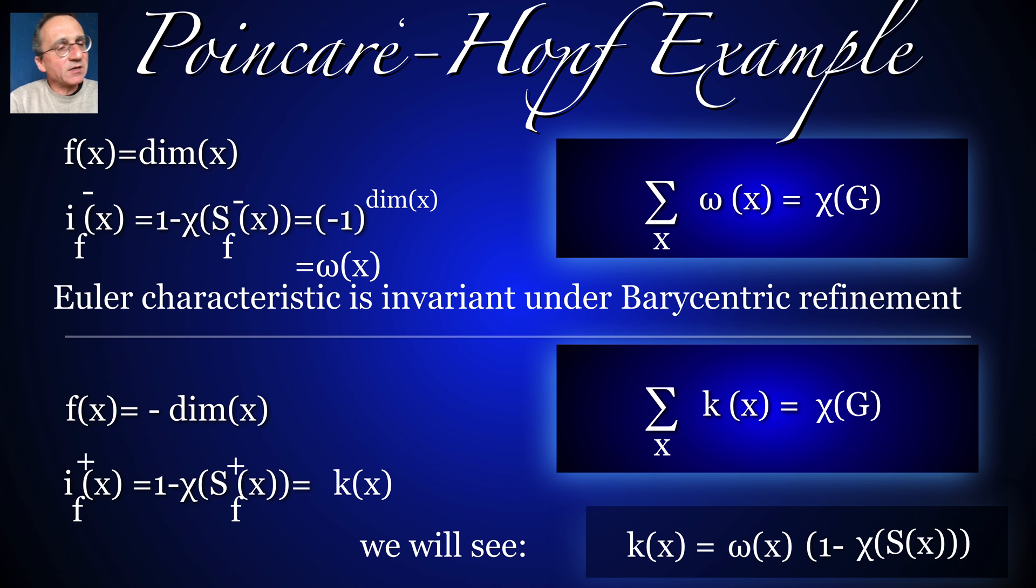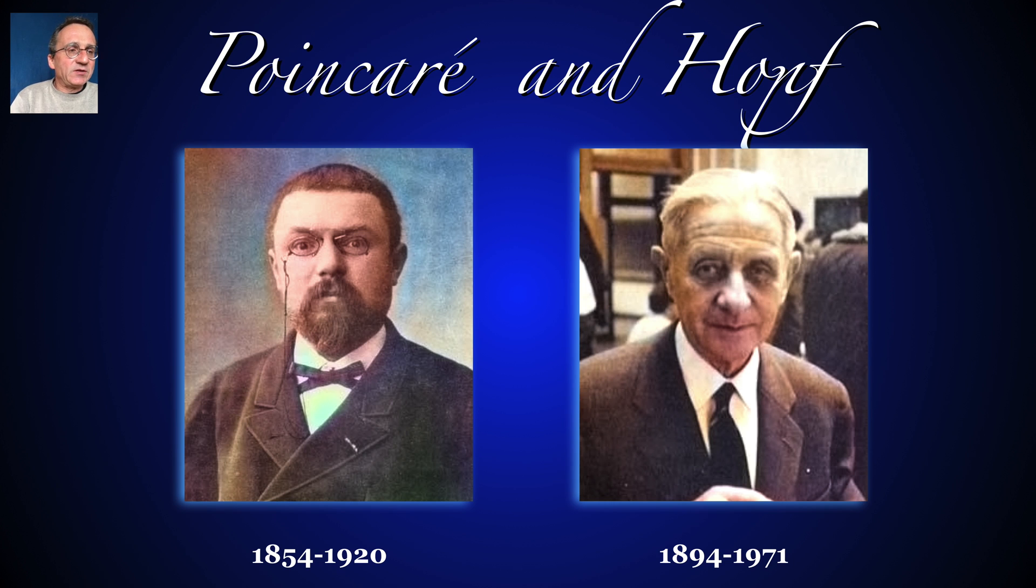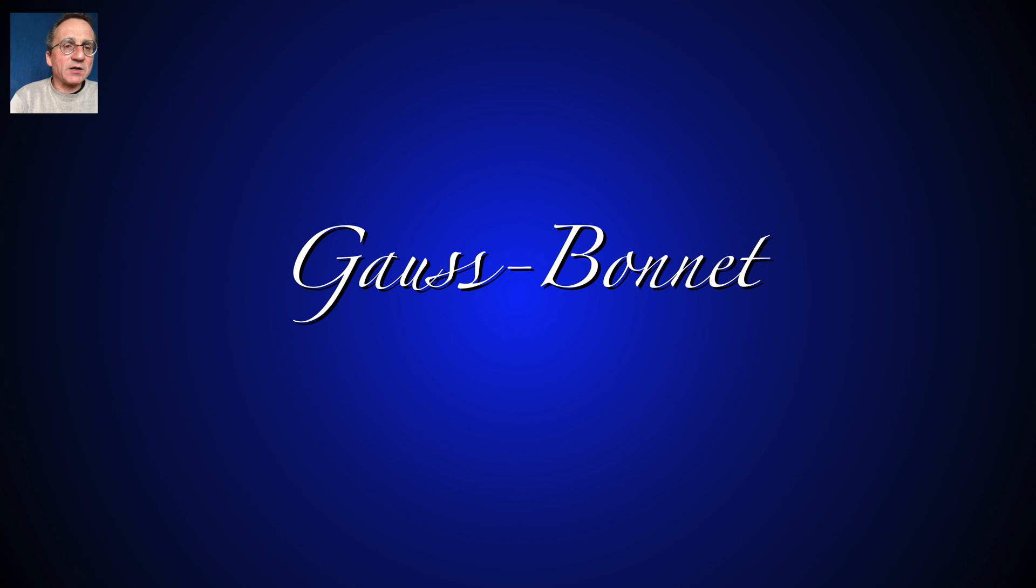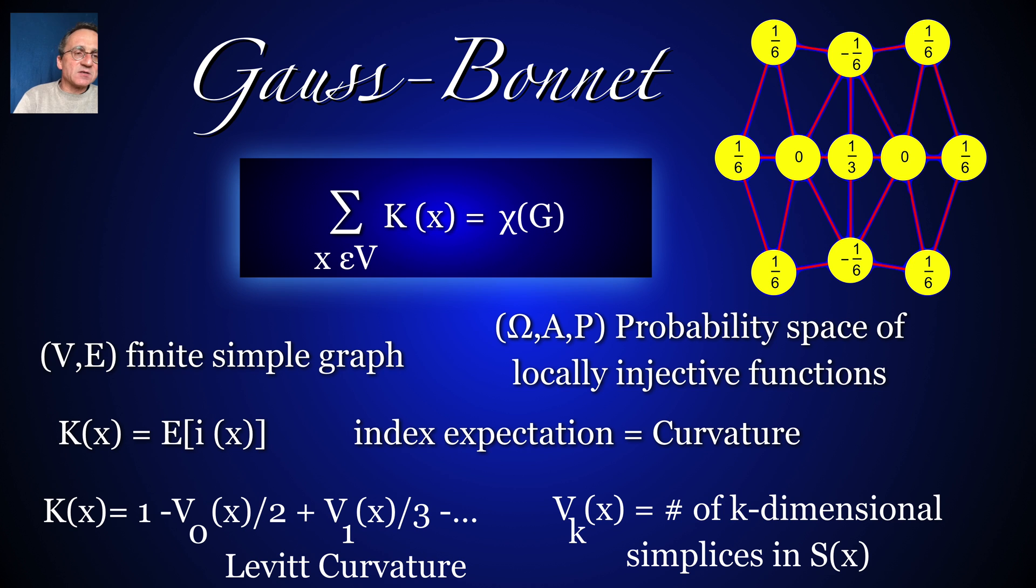Interesting for us, in the energy case, if fx is put to minus the dimension of x. In that case, we get the index omega x times 1 minus the Euler characteristic of the sphere. And that's important in the proof of the energy theorem. Poincare and Hopf both built important bridges to modern topology. Hopf is close to me because some students of Hopf, like Specker or Stambach were my teachers in college. Gauss-Bonnet can be obtained now from Poincare-Hopf by averaging over a probability space of functions.